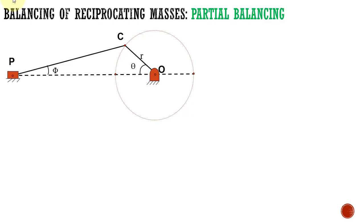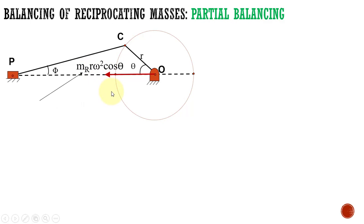Welcome to my lecture. Today we are going to discuss about partial balancing of reciprocating masses. This is the reciprocating mechanism. Here the unbalanced reciprocating force is mrω²cosθ. This is the unbalanced reciprocating force.